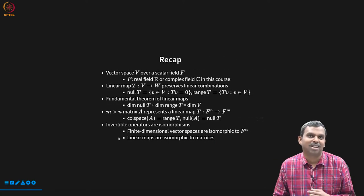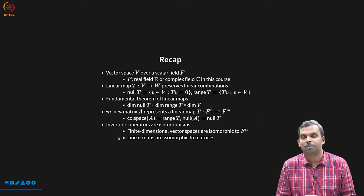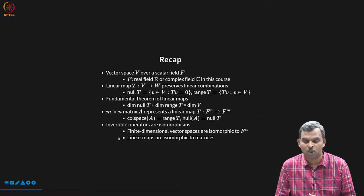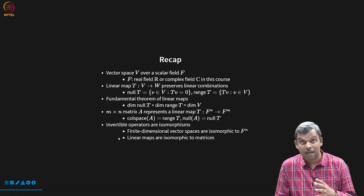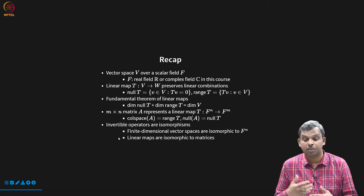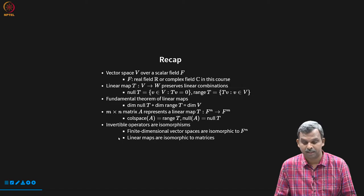Quick recap. We all know these vector spaces over a particular scalar field F — F is usually real or complex in this course. We have studied linear maps from one vector space to the other, which preserves linear combinations. We looked at the null space, we looked at the range space.